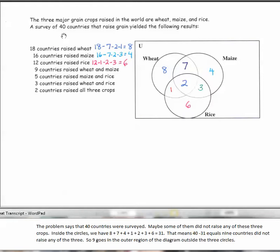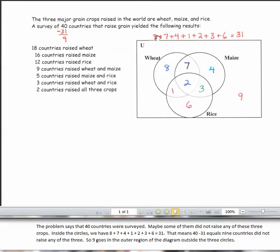The problem says that 40 countries were surveyed. Maybe some of them did not raise any of these three crops. Inside the circles, we have 8 plus 7 plus 4 plus 1 plus 2 plus 3 plus 6 equals 31. That means that 40 minus 31 equals 9 countries did not raise any of the three crops. So 9 goes in the outer region of the diagram outside the three circles.